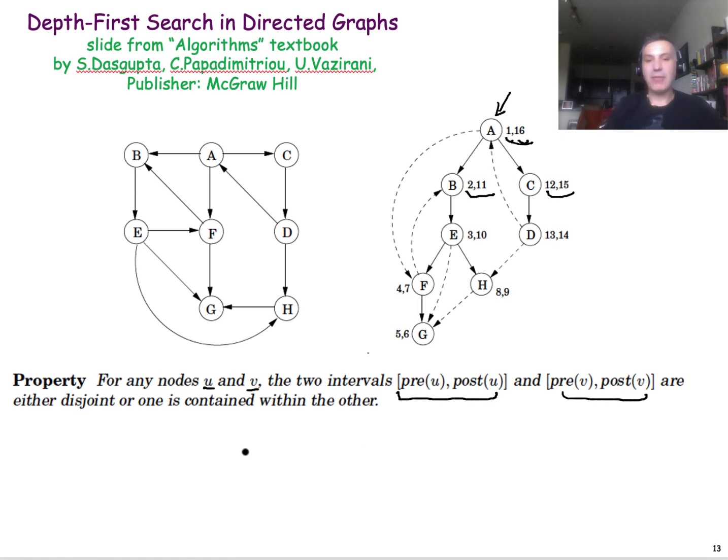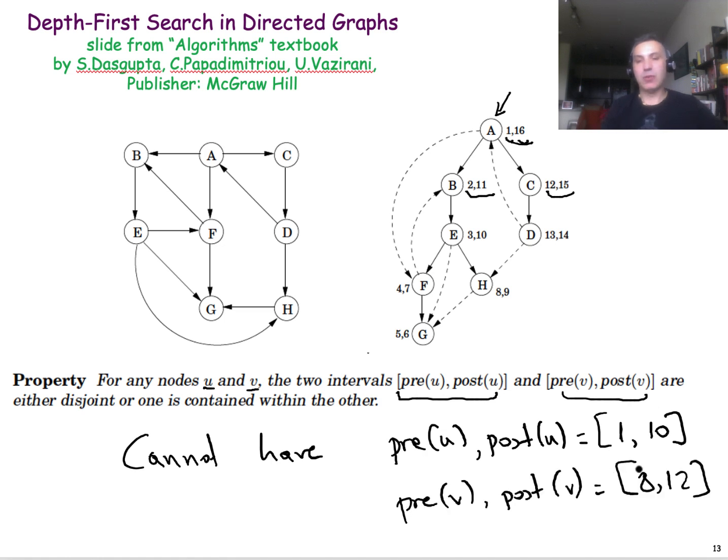So you cannot have, for example, an interval for one node, for node U, 1.10, and for another node. You cannot have something like this.